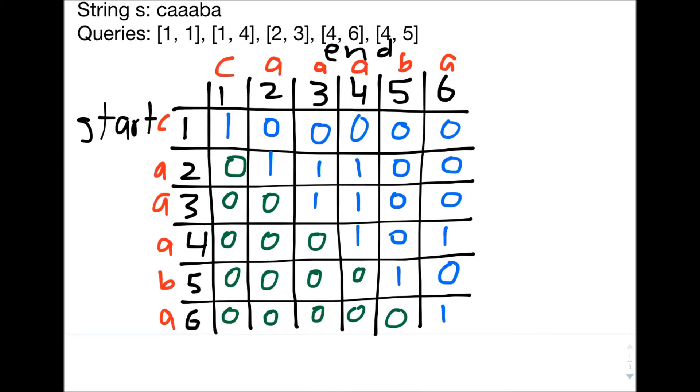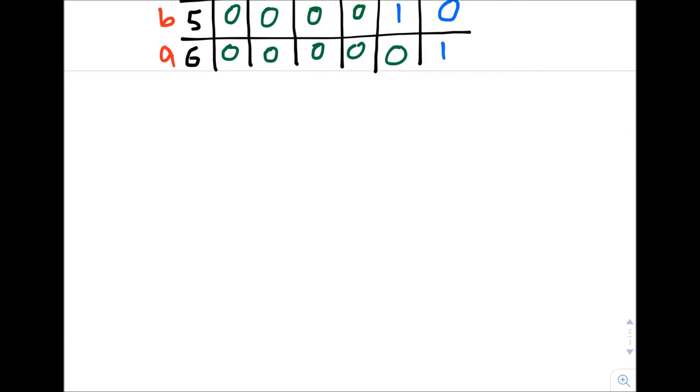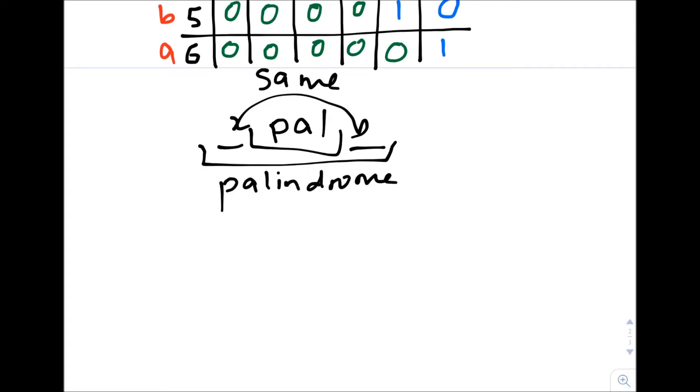The next question is, how do we write a program to create this table? The idea is as follows. Let's say we have a palindrome. If the character to the left of the palindrome is the same as the character to the right of the palindrome, then the whole entire thing is a palindrome. How do we know if this is a palindrome? Well, we can look through all possible strings of length 1. Any string of length 1 is just one letter, so it has to be a palindrome.